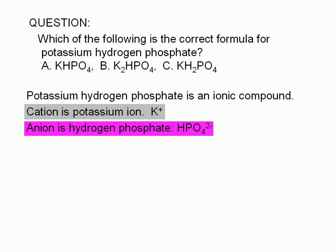At this point, we can eliminate choice C. In choice C, the anion appears to be dihydrogen phosphate, H2PO4, with a negative 1 charge. In fact, choice C would be the formula for potassium dihydrogen phosphate.